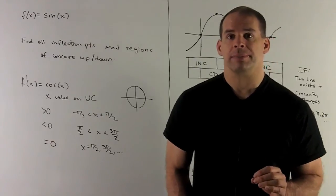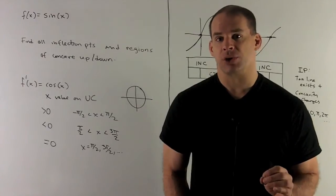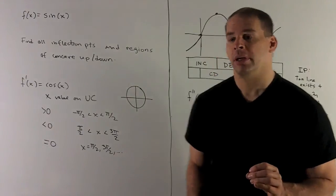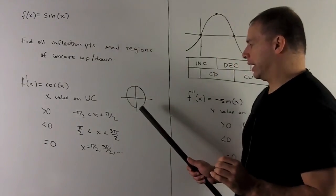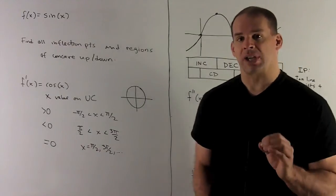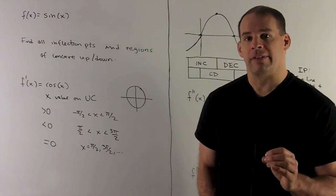So I take my derivative. Derivative of sine of x is cosine of x. Cosine of x is the x value in the unit circle. So we'll note, if I'm between minus pi halves and pi halves, cosine of x is positive, our derivative is positive.